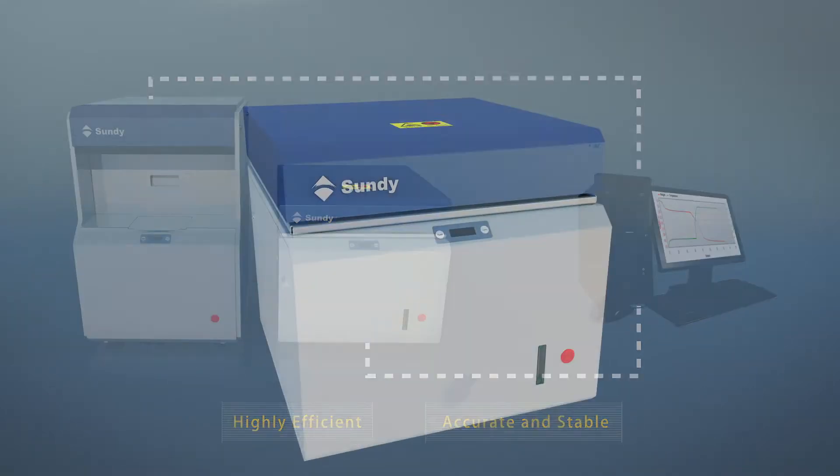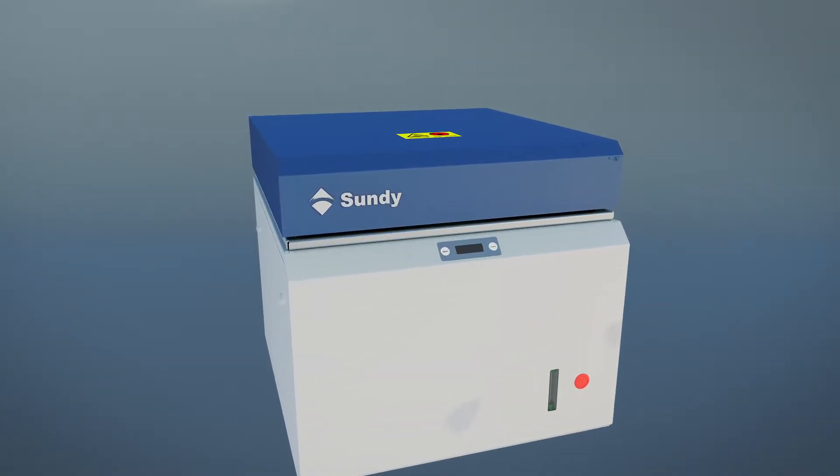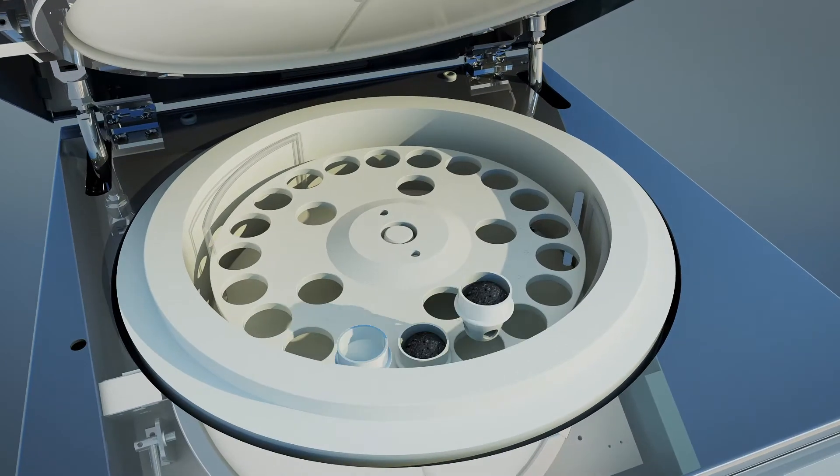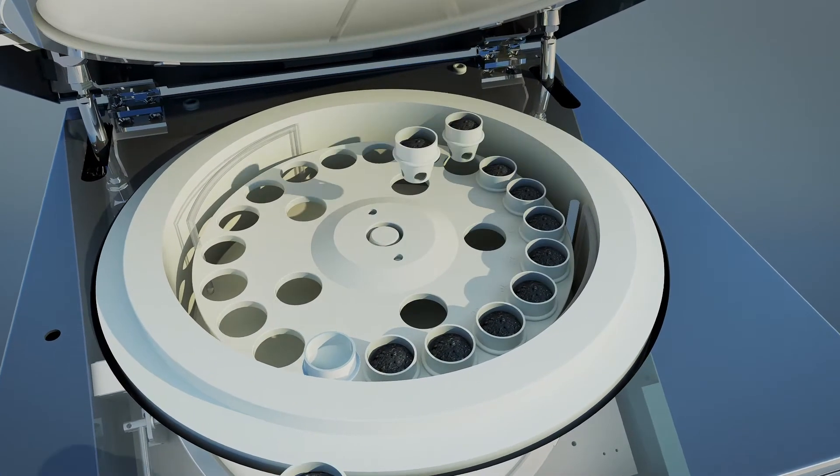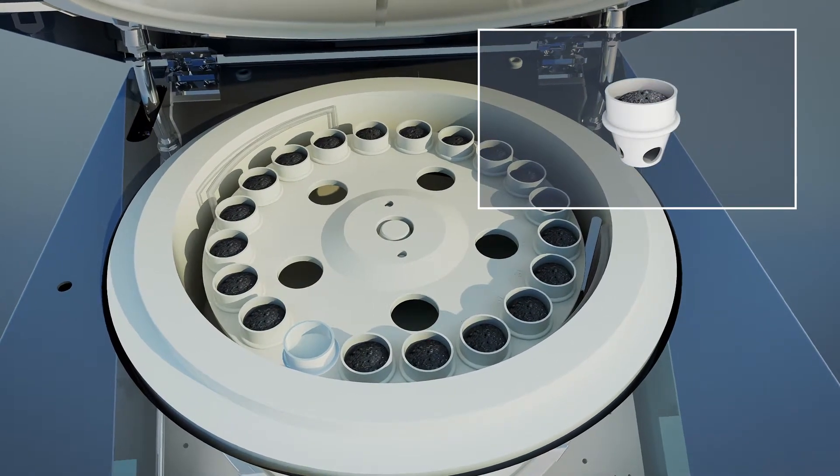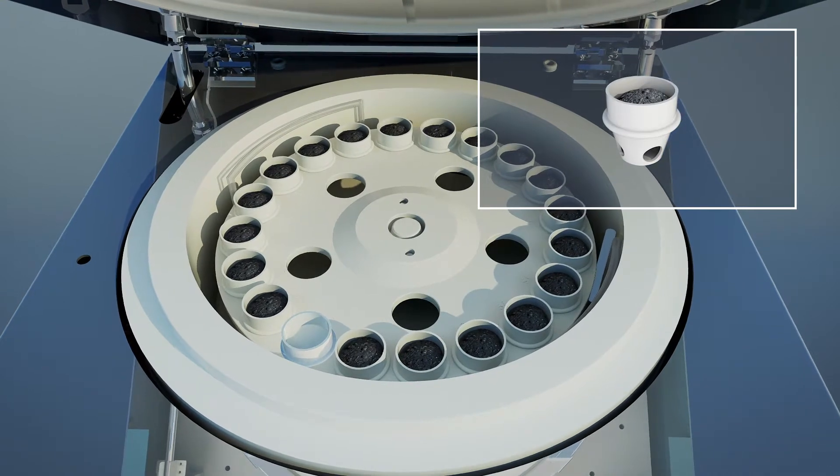The SDTGA 6000 can start the test immediately. With a single startup, it can analyze two batches, 38 samples, including sample weighing and cooling, in one working day, 8 hours.